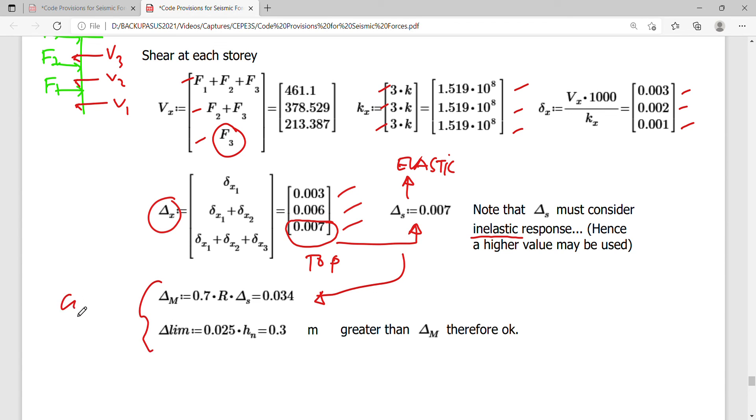These are given to us by the code provided by the NSCP. Notice that the limiting value is 0.30 and the computed value is only 0.34, very far from the limiting value. So we can say now that the story drift limitation is satisfied in this case. That's how to do it when you are concerned with the story drift provisions of the NSCP code. Thank you very much for listening. Have a nice day.